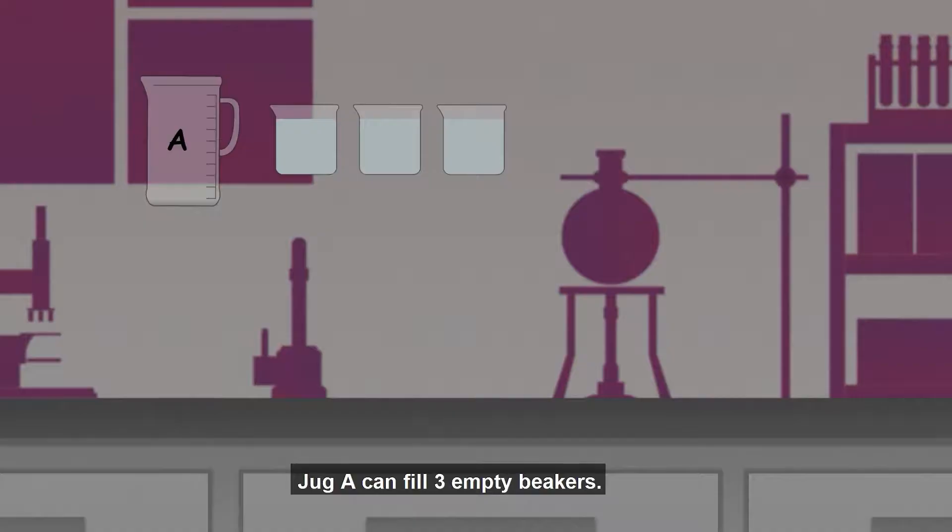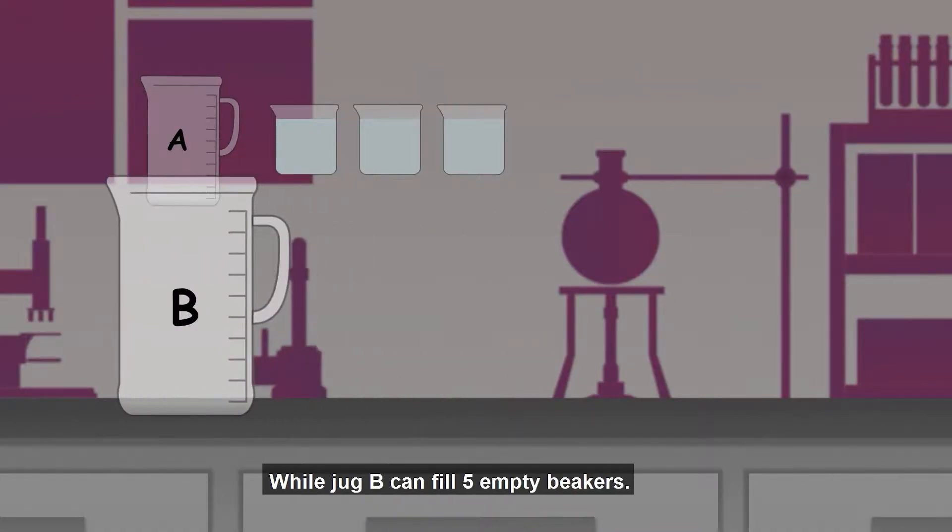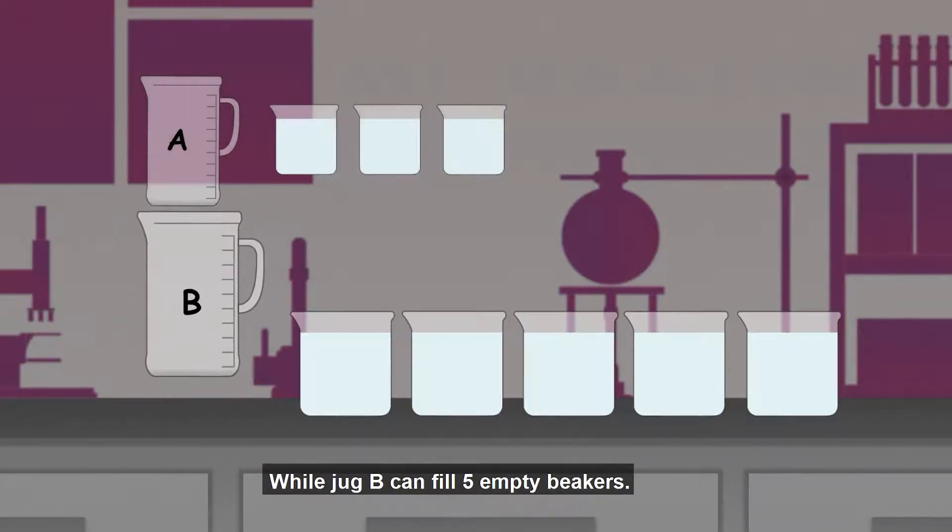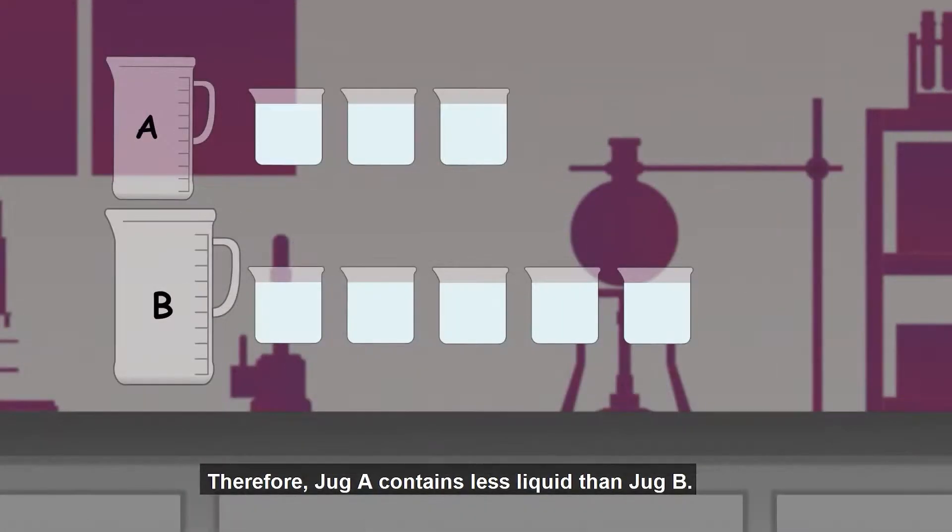Jug A can fill three empty beakers, while Jug B can fill five empty beakers. Therefore, Jug A contains less liquid than Jug B. Jug B contains more liquid than Jug A.